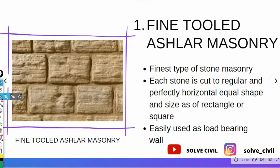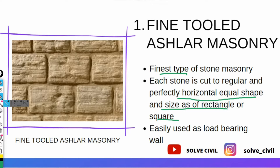Fine-tooled ashlar masonry is the finest type of stone masonry. Each stone used in this masonry is cut to a regular and perfectly horizontal, equal shape and size — as of a rectangle or square. These are mainly used as load bearing walls.